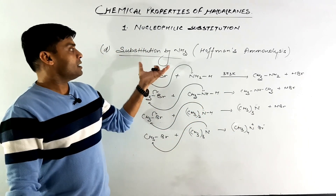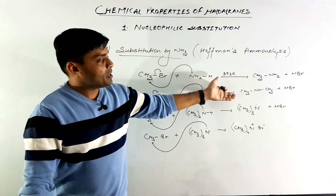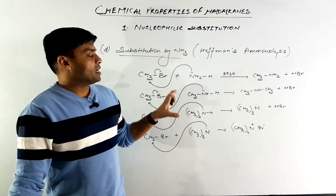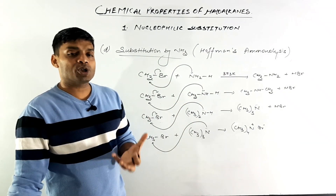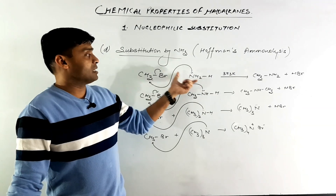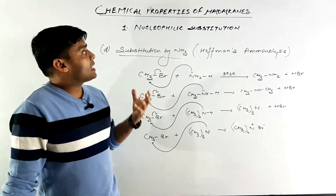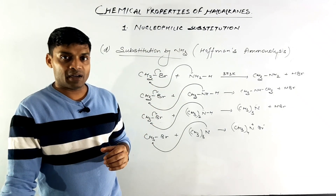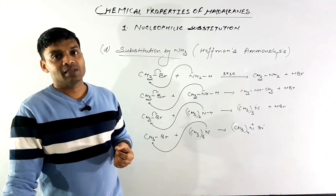So the drawback of substitution by ammonia is that if excess alkyl halide is used, you get a mixture of primary amine, secondary amine, tertiary amine, and quaternary ammonium salt. To avoid this, ammonia must be taken in large excess so that methyl bromide is exhausted before ammonia runs out. These were the four substitution reactions discussed today as Part 1 of nucleophilic substitution reactions of alkyl halides. In Part 2, we will discuss the remaining substitution reactions of this series.